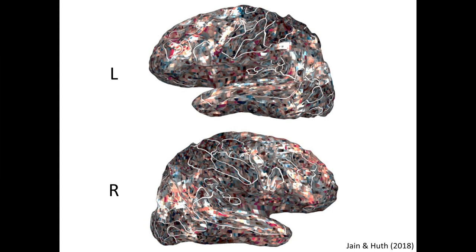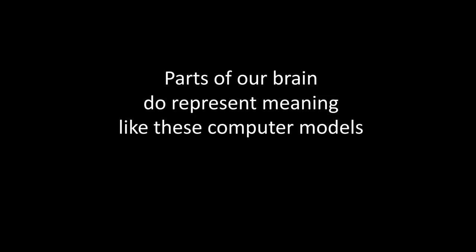This shows up in other studies too. Here we have brain images captured while people listen to podcasts. Anything that's black means it's not significantly related to the computer model of meaning, but here we see lots of parts of the brain are not black. That shows us that this computer model of meaning is related to how your brain registers meaning as you're listening to a podcast. So parts of our brains do represent meaning in the same way that computers do — computers think like us.